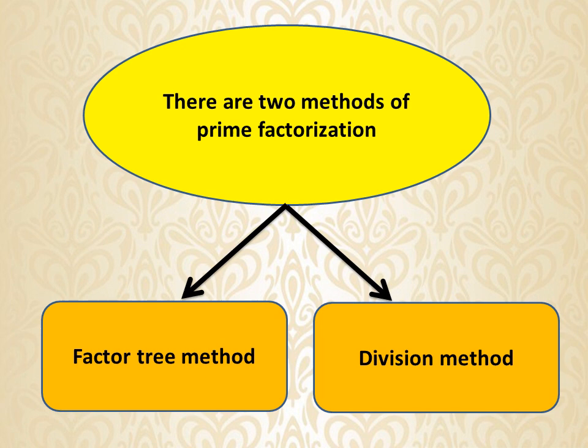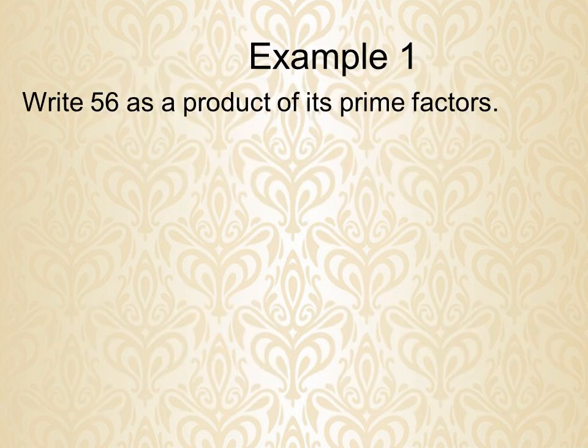This is Example 1. We will solve this example with the help of the factor tree method. The question is: write 56 as a product of its prime factors.